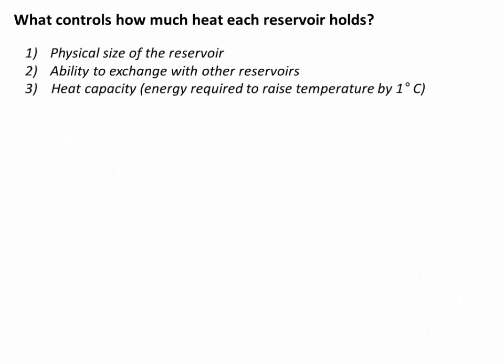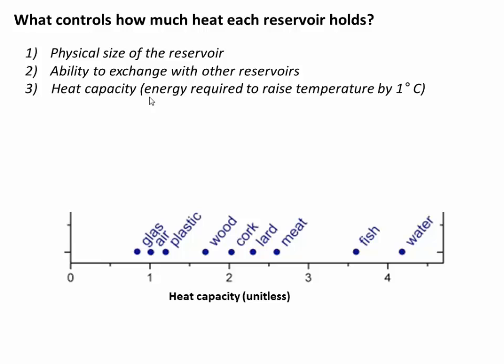Now let's talk about what controls how much heat energy each reservoir can hold. There are three big factors: the size of the reservoir, the ability of that reservoir to exchange energy with other reservoirs, and the heat capacity of the reservoir. Heat capacity refers to how much energy you have to put into something to raise its temperature by one degree Celsius. Things with a high heat capacity can absorb more energy. Here's a plot showing heat capacity — air is at about one, wood is at about one and a half, and water is way out at four.